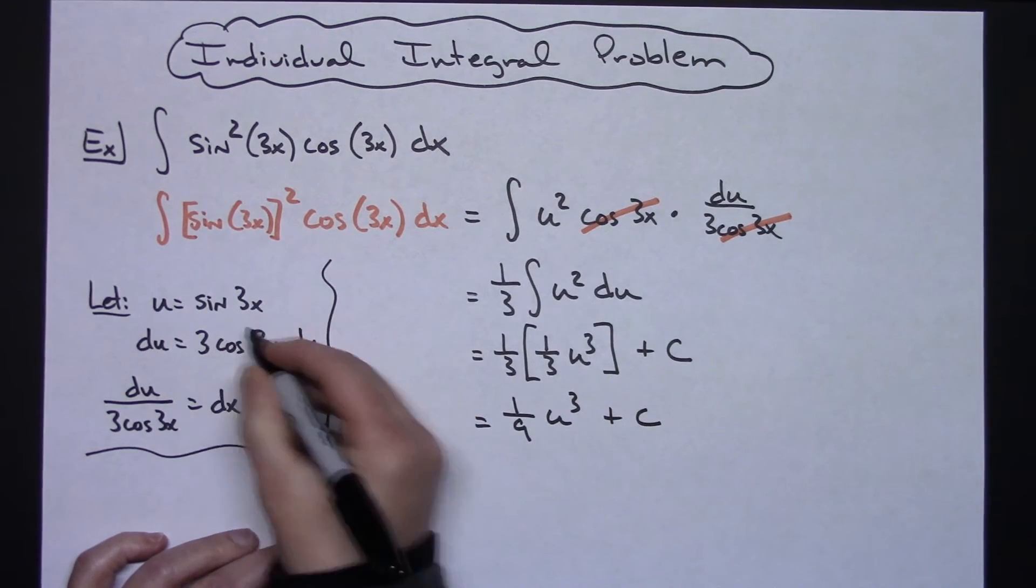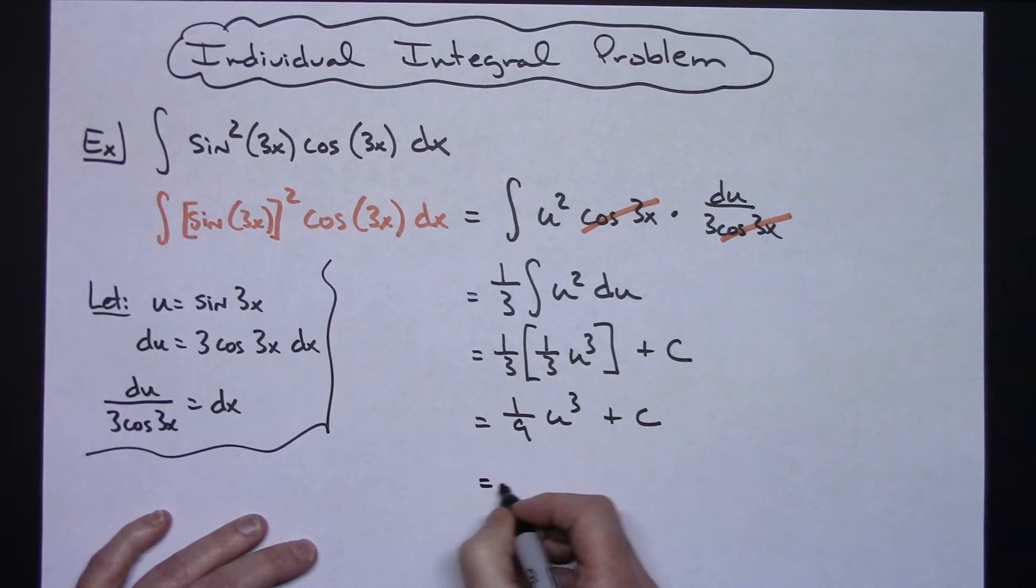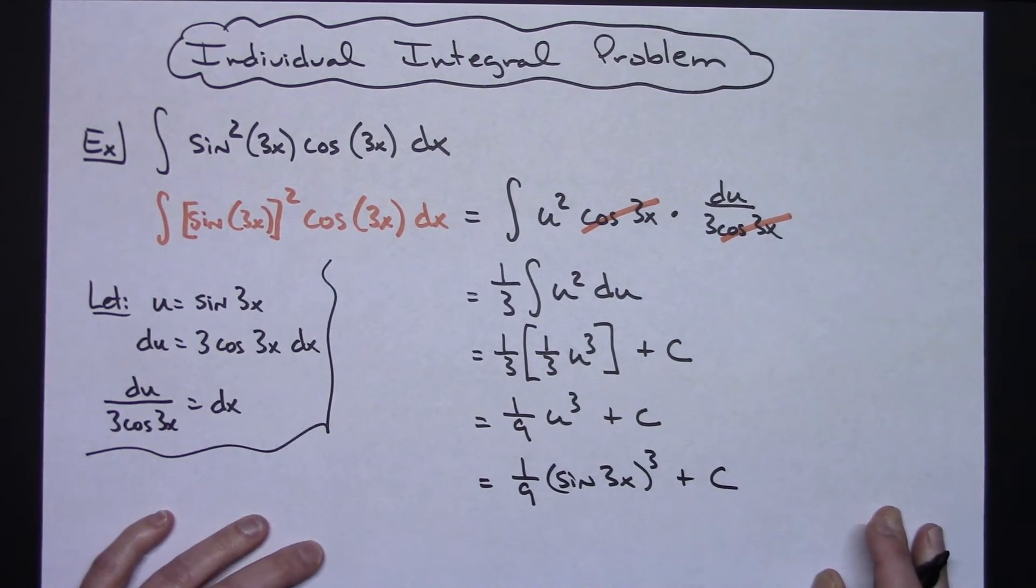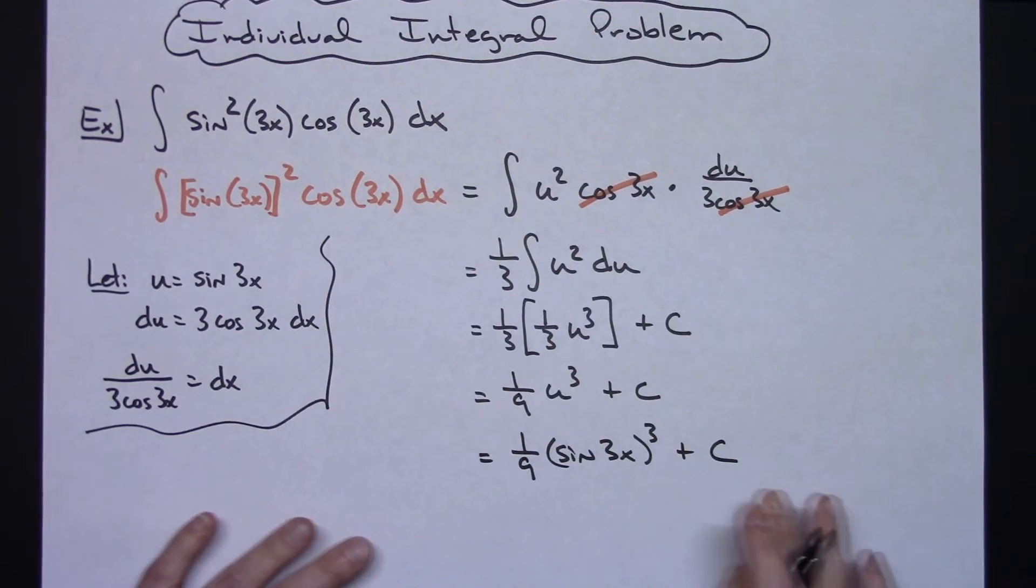Now it's about time I replace that u with what it equals. So then I'm going to have a one-ninth sine of 3x cubed plus C. Technically there's absolutely nothing wrong with that answer right there.